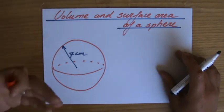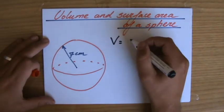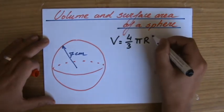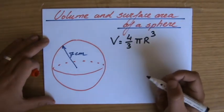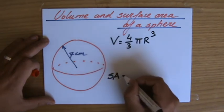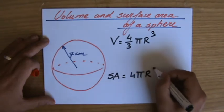They are given to you in the question, and the question then will say the volume you can calculate by doing 4 over 3 times pi times the radius to the power of 3. And the question will also tell you that the surface area is 4 times pi times the radius squared.